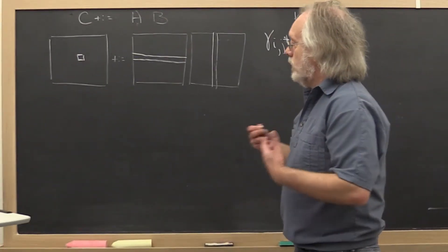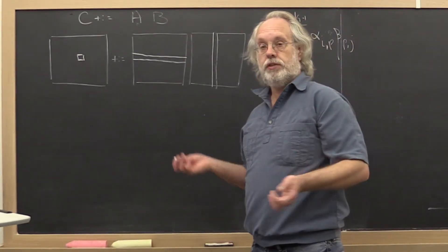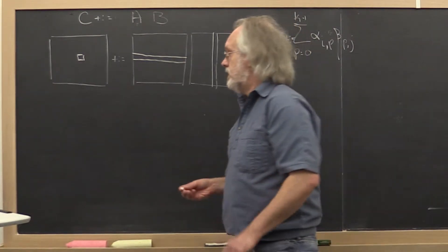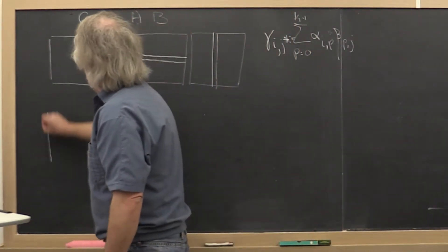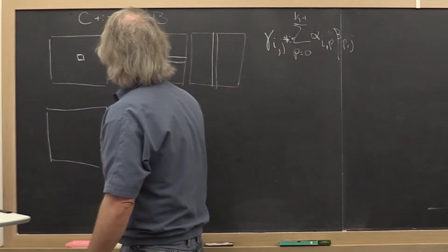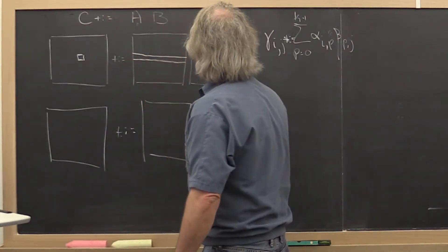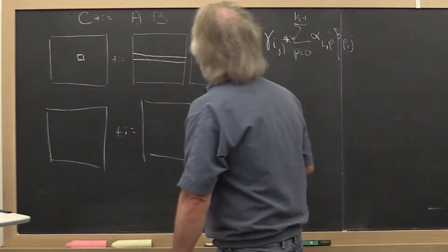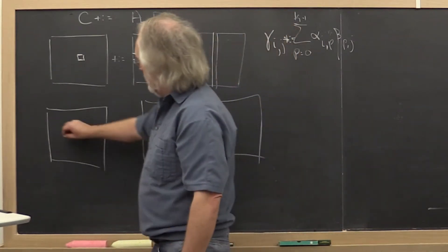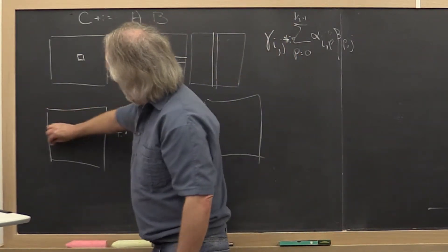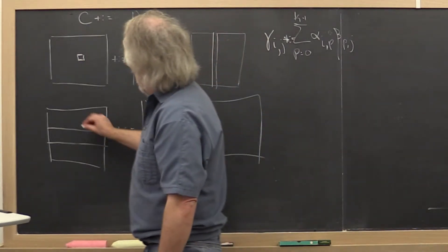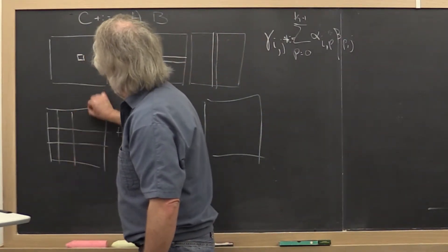Now what if we think of our matrices as consisting of sub-matrices? So we have our matrix C, we want to update it with A times B. What if we partition our matrix C into three in that direction and four into this direction?